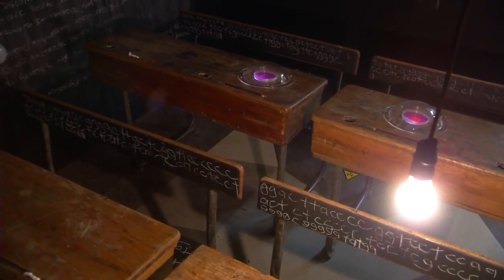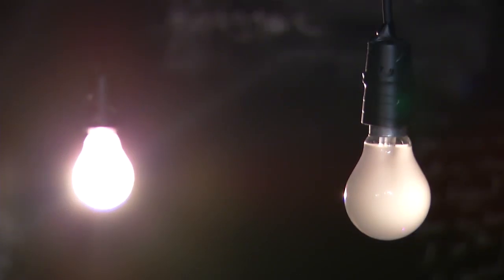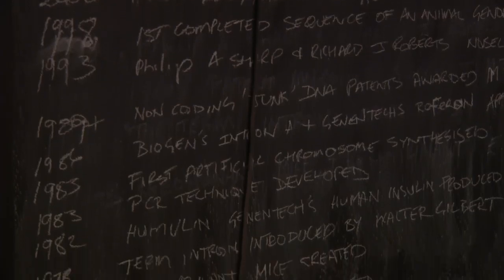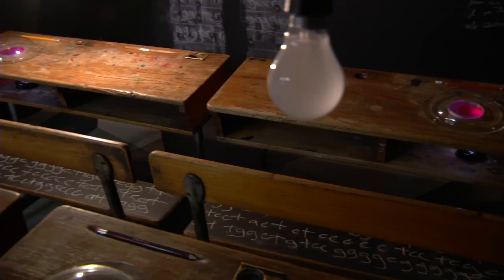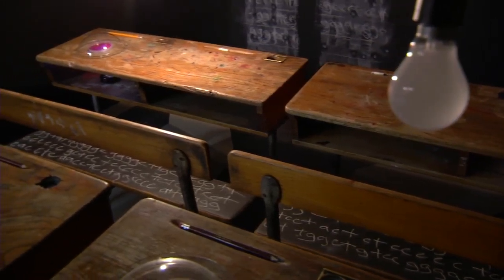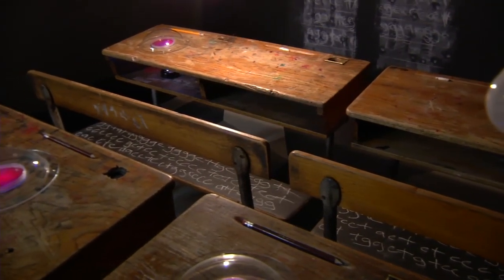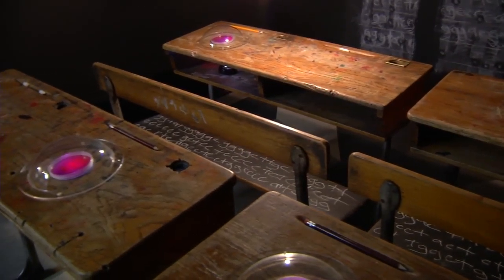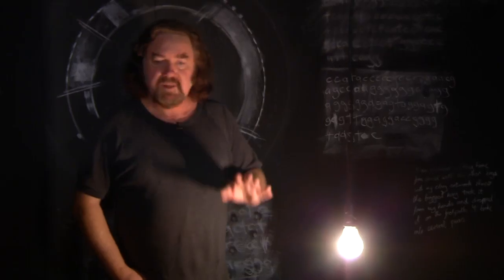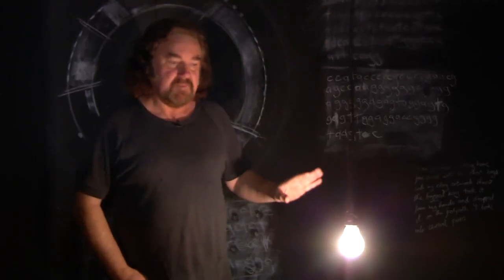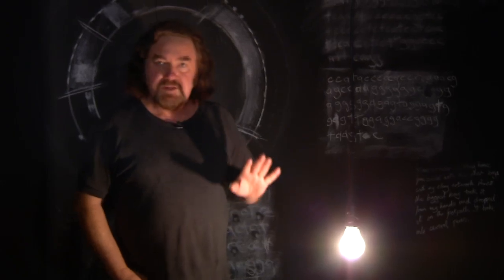The installation Proto-Animate 20 is comprised of a darkened space with blackboard paint, and it has four tables, four desks, which are meant to be representative of the era when I went to school in the 60s. There's also another desk up on the wall as well.